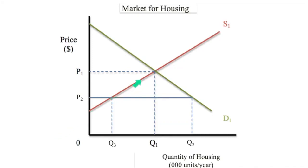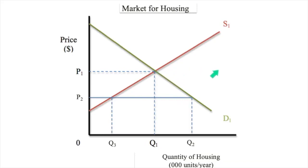Well, these suppliers that got cut out of the marketplace are going to respond. They're going to go to the government and say, what about us? You just artificially lowered the price down to P2, and now you're going to have to solve that problem because otherwise we're upset and we're going to vote you out of office. And so what the government would then do is provide a subsidy to these people, and move this supply curve outward, and therefore create a new S2 curve here.